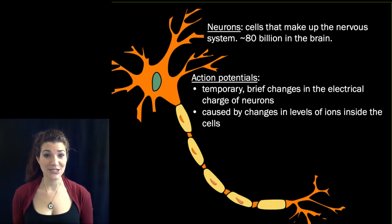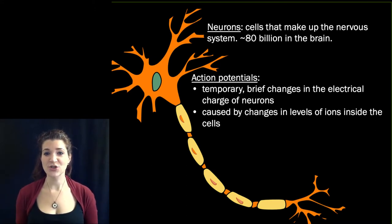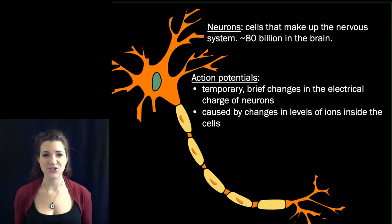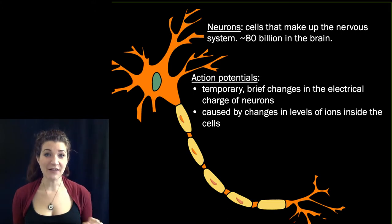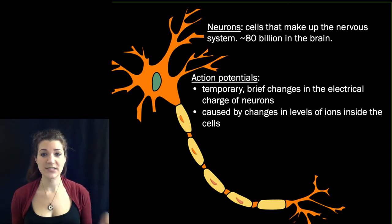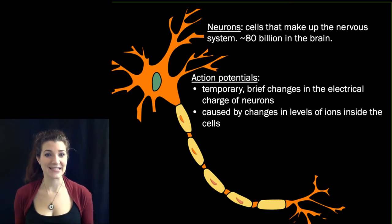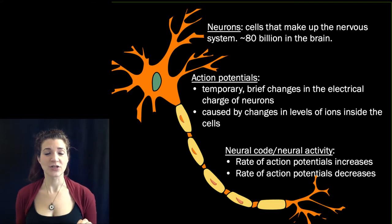One feature I want to particularly highlight about action potentials is that they are binary signals — zeros and ones. A cell is either firing, meaning having an action potential, or it is not. Action potentials don't have a size or a magnitude; they are just happening or not happening. So in order to code for different levels of activity, such as brighter or more intense lights, we can't have bigger or smaller action potentials. Instead, what we see are changes in the rates of action potentials — the firing rate at which action potentials are occurring can increase or decrease.